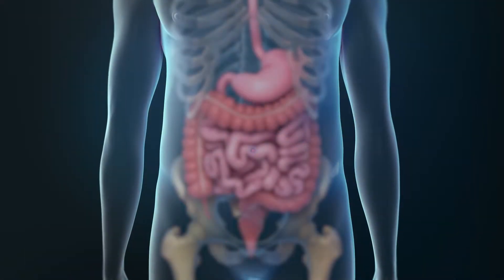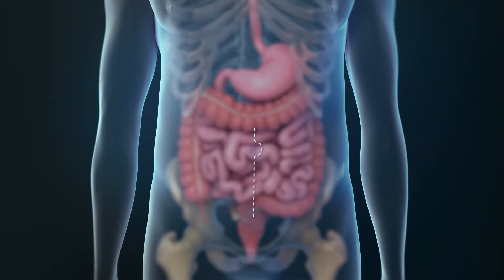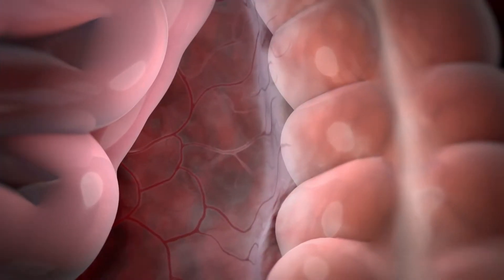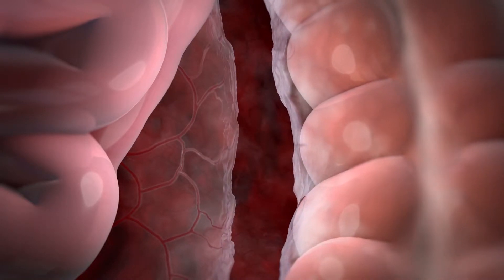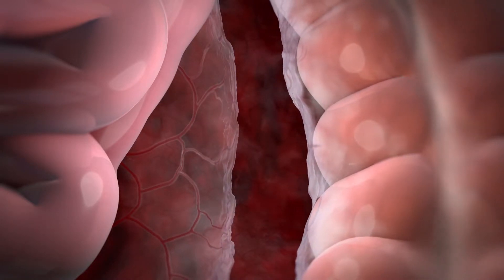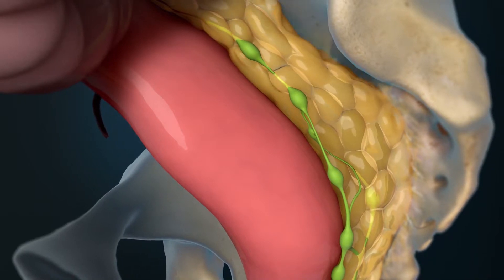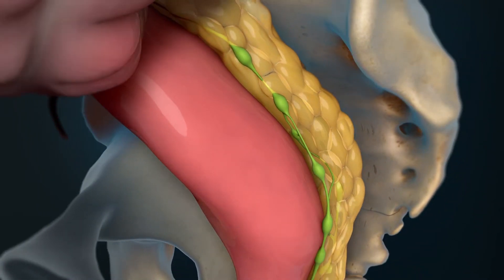An open total mesorectal excision will begin with an incision in your abdomen. Inside your abdomen, your surgeon will separate the large intestine above your rectum from the tissue covering it. Then your rectum and mesorectum will be separated from the tissue in your pelvis.